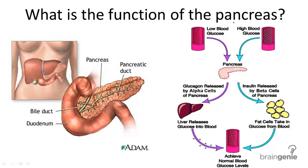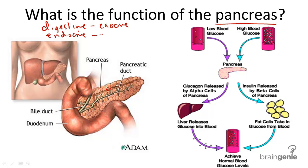What is the structure and function of the pancreas? The pancreas is involved in both the digestive and the endocrine systems. It has both an exocrine and an endocrine role, meaning that the pancreas both secretes digestive enzymes for the small intestine and also controls body functions by releasing hormones into the bloodstream.